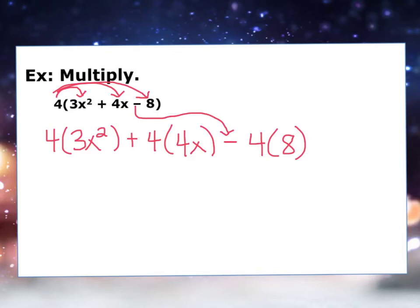Okay, now I'm going to multiply. For the first one, I get 12x squared plus 16x minus 32.